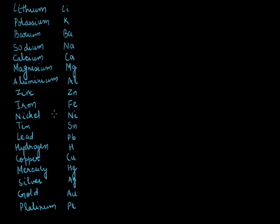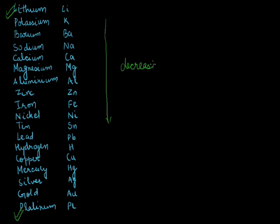In this table, the most reactive metal is the one placed at the top of the series, that is lithium, while the least reactive metal is the one placed at the bottom, that is platinum. As we go down this table, the chemical reactivity of metals decreases. So lithium is the most reactive metal, potassium is less reactive, and as we move down the table the reactivity of metals decreases, with platinum being the least reactive.